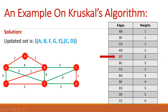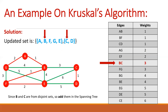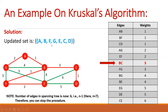We proceed down and the next edge is BC. B belongs to set {A, B, F, G, E} and C belongs to set {C, D} — they are from different sets. So we add edge BC to the spanning tree, merging the two sets into one complete set. Notice that the total number of edges in our spanning tree is now six — that is one, two, three, four, five, six — which equals n minus one, where n is seven vertices, so seven minus one equals six.